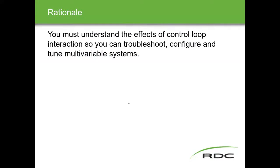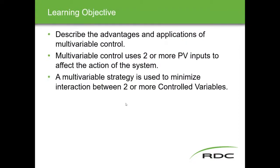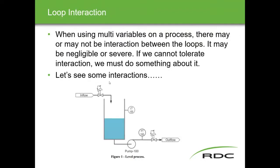We're talking about control loop interaction, and talking about multi-variable using two or more PV inputs to affect the action of the system. The strategy we're developing is designed to eliminate the interaction that one loop has when it changes — the effect it has on the other one and vice versa. We also talked about interaction between loops and whether you can determine whether or not there's interaction.